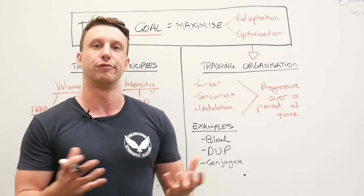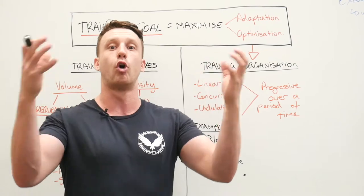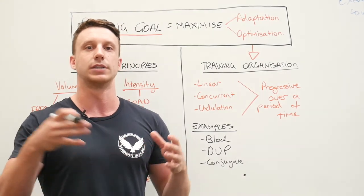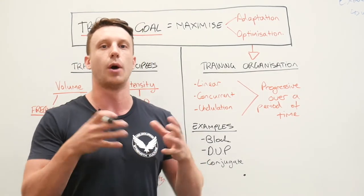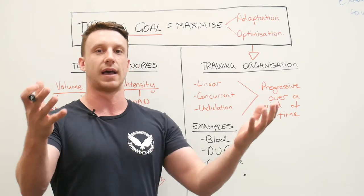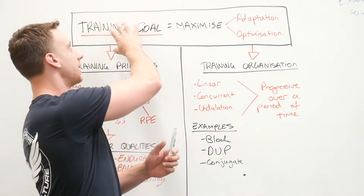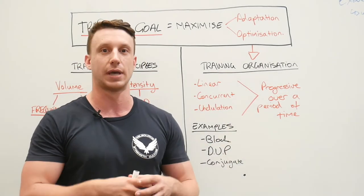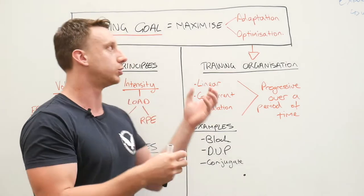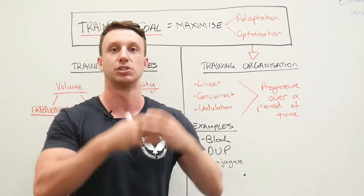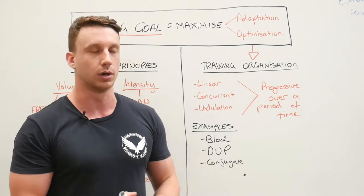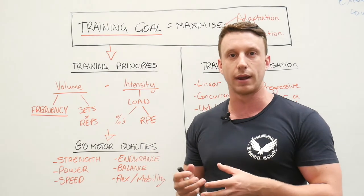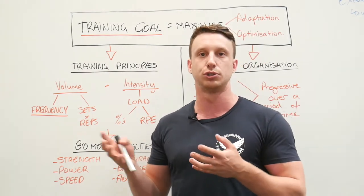You either maximize the adaptation of a quality — whether that be strength, endurance, or muscle hypertrophy — or you maximize the optimization of one of those biomotor qualities. That would be, for example, optimizing the strength you've built to actually perform or present that strength through a peak at a competition, or for a bodybuilder to optimize their physique to present themselves as the best package on stage. The training goal should always be to either develop the adaptation or maximize the optimization of presenting that motor quality.